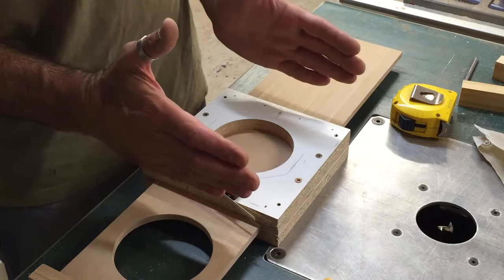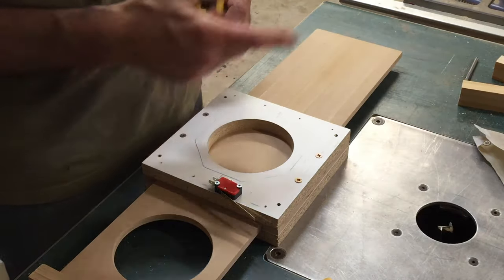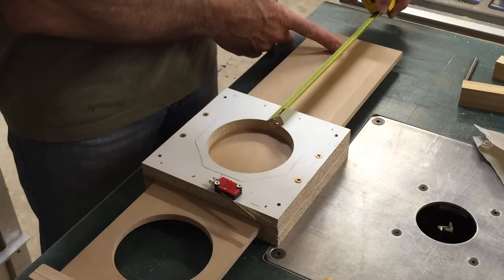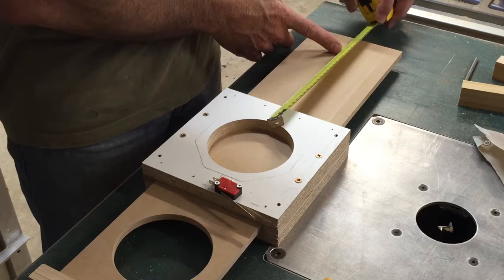So this sits in the very center of my table saw, and I've just taken a measurement, and from the edge of the pipe to the outside edge of the front panel of the table saw is 210mm, which is there.